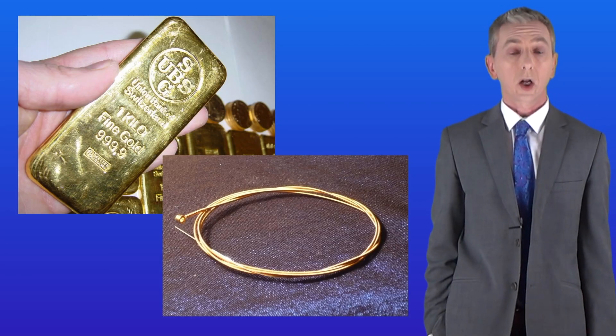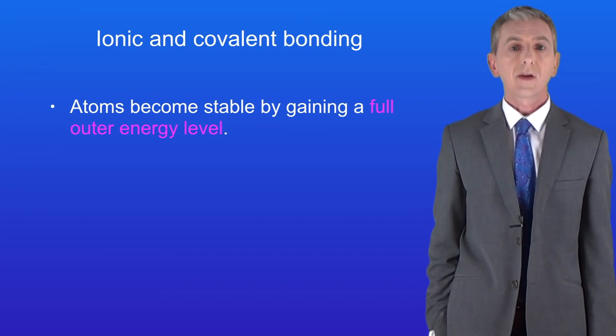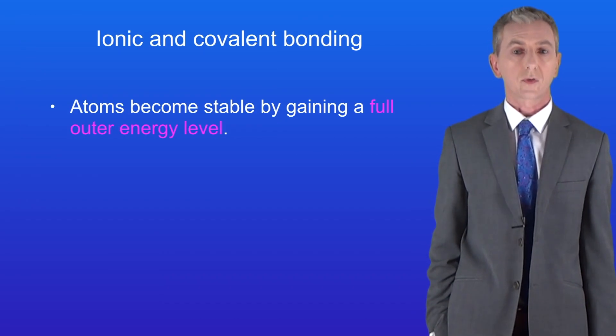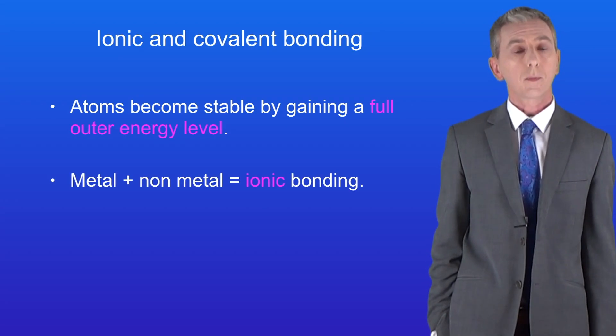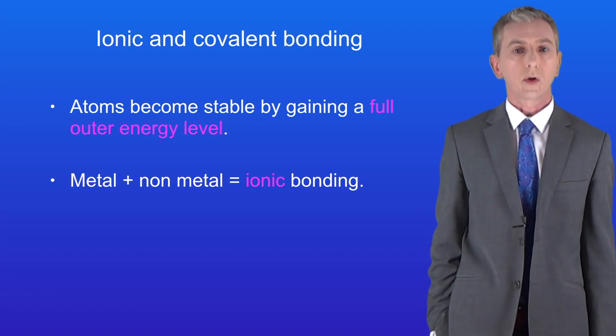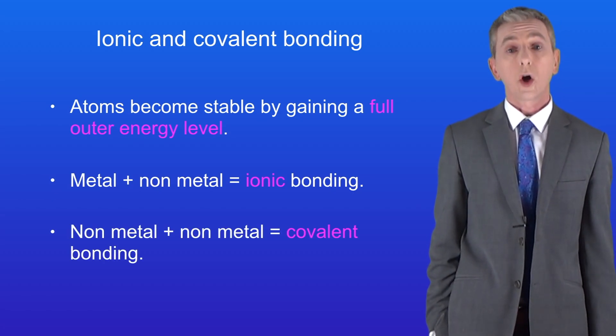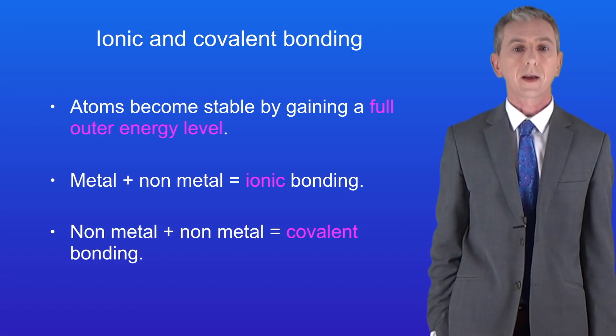So let's start by taking a closer look at metals. In the previous videos we've seen that atoms become stable by gaining a full outer energy level. When a metal atom reacts with a non-metal atom we see ionic bonding. However when two non-metal atoms react we've got covalent bonding.